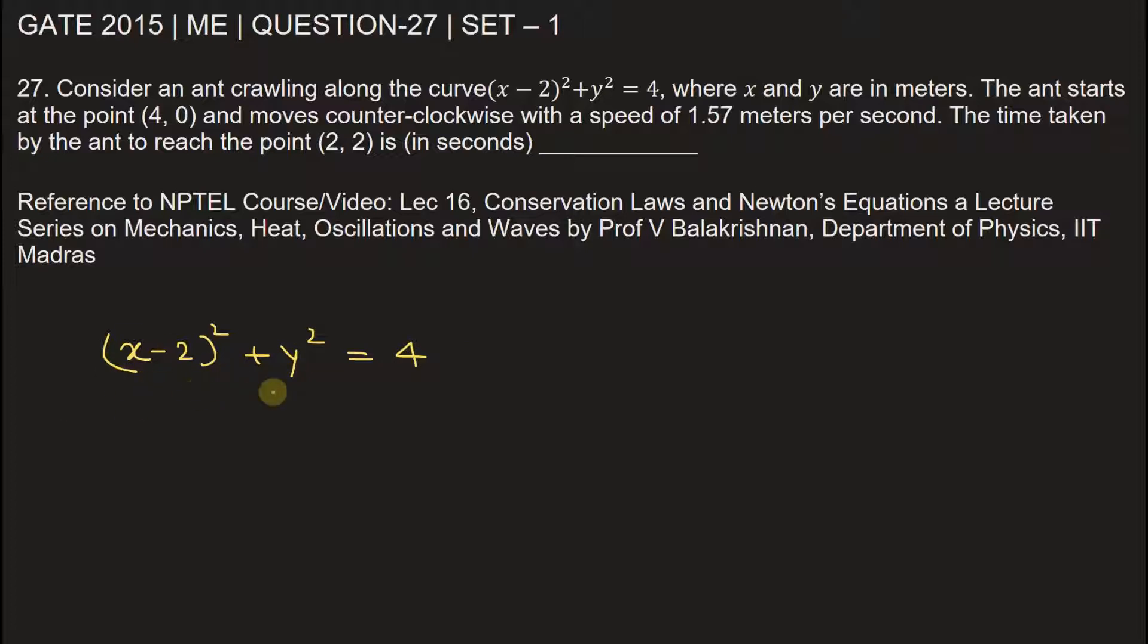(x - 2)² + y² = 4. Now if we compare this with the equation of a circle, which is (x - a)² + (y - b)² = r²,